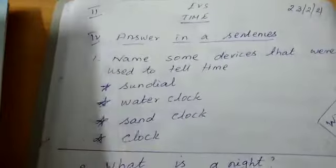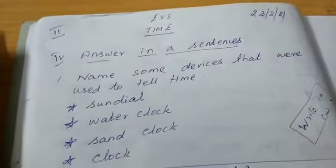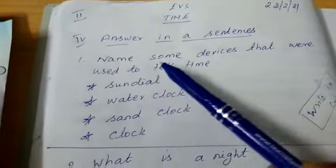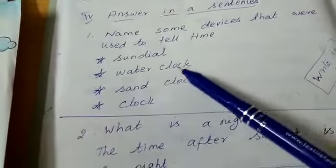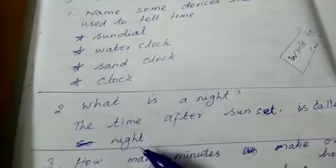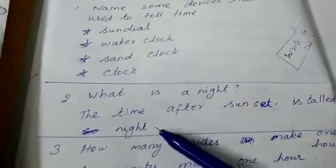Shall we read it again? Name some devices that were used to tell time. Sun dial, water clock, sand clock, clock. What is the night? The time after sunset is called night.